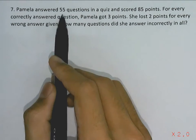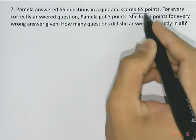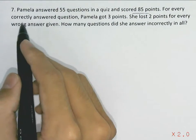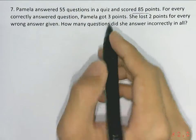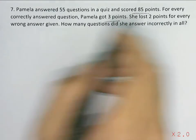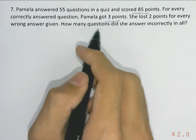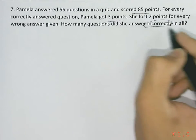Pamela answered 55 questions in a quiz and scored 85 points. For every correctly answered question, Pamela got 3 points. She lost 2 points for every wrong answer given. How many questions did she answer incorrectly in all?